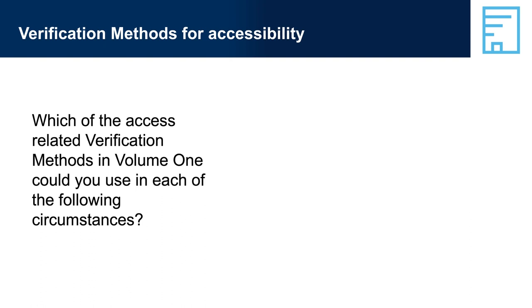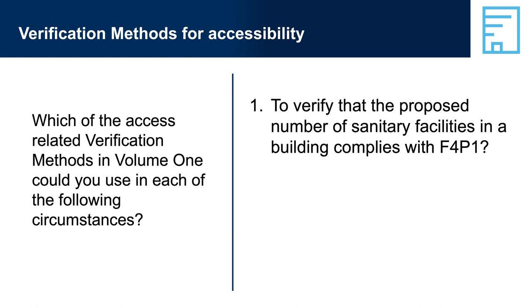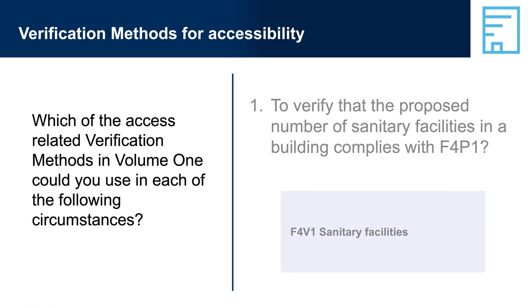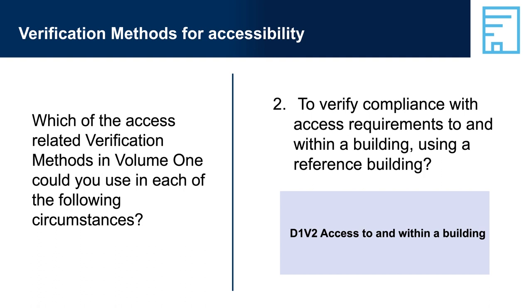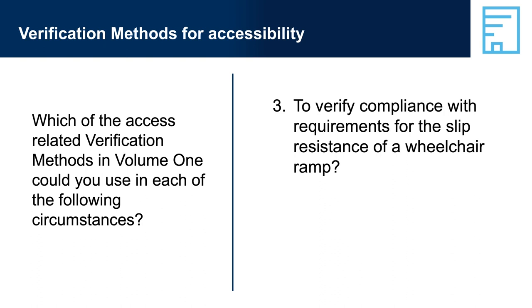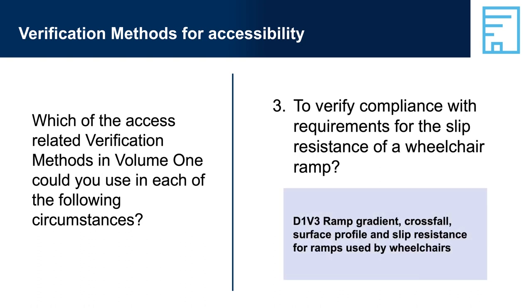Verification Methods for Accessibility. Question 1: To verify that the proposed number of sanitary facilities in a building complies with F4P1? Answer: F4V1, Sanitary Facilities. Question 2: To verify compliance with access requirements to and within a building, using a reference building? Answer: D1V2, Access to and Within a Building. Question 3: To verify compliance with requirements for the slip resistance of a wheelchair ramp? Answer: D1V3 — Ramp Gradient, Crossfall, Surface Profile, and Slip Resistance for Ramps Used by Wheelchairs.